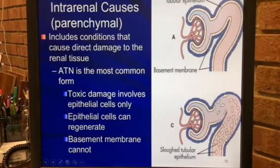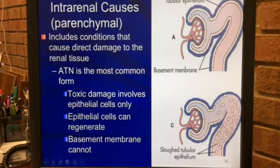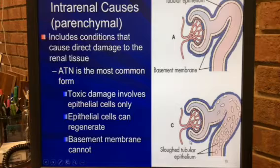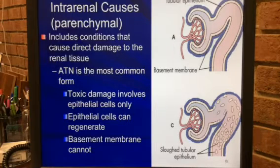The toxic damage involves the epithelial cells only. You've got a tubular epithelium and a basement membrane. The beauty of the tubular epithelium is that it can regenerate; the basement membrane does not regenerate. ATN can be caused by certain antibiotics, causing the tubular epithelium to slough off, after which the kidneys just won't work — they need their epithelial lining. Ischemic necrotic damage will also damage the basement membrane, and then the amount of function that comes back can be a little bit spotty.